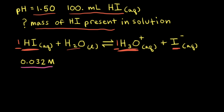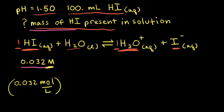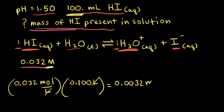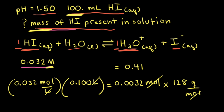Now that we know the initial concentration of HI, we're ready to find the mass of HI present. Molarity is moles per liter, so we rewrite this as 0.032 moles per liter. The volume of the solution is 100 milliliters, which equals 0.100 liters. Multiplying moles per liter by 0.100 liters, the liters cancel, giving us 0.0032 moles of HI. Finally, we multiply by the molar mass of HI, which is 128 grams per mole, and this gives us 0.41 grams as our final answer.